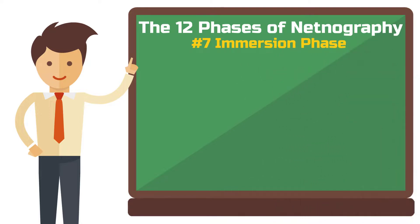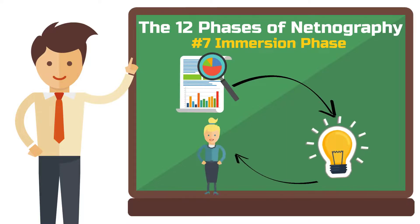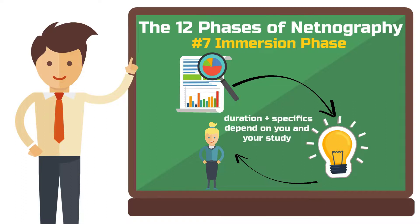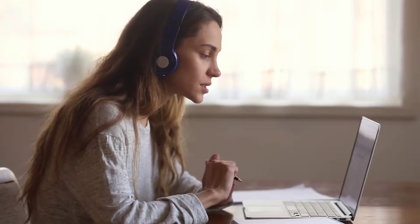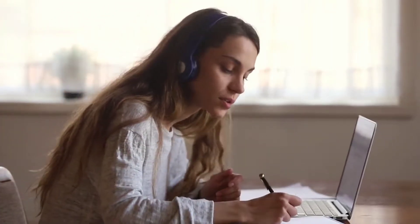Phase 7: The immersion phase. In this phase, you venture into the field, beginning to interact regularly with the data, topics, and individuals. The duration and specifics of your immersion depend entirely on you and your study. For inspiration, read the research design chapters of published netnographies. Don't stress at the beginning — there is no right or wrong, no too much or too little. Your understanding of your community and your netnography project will grow over time. The more you immerse yourself, the clearer the overall picture becomes and the next steps naturally present themselves.